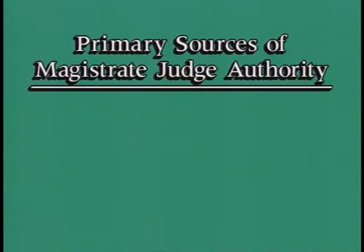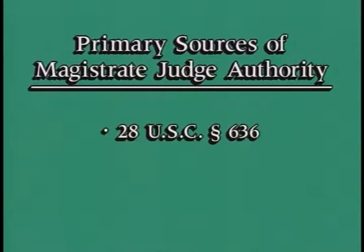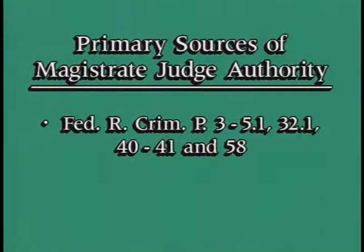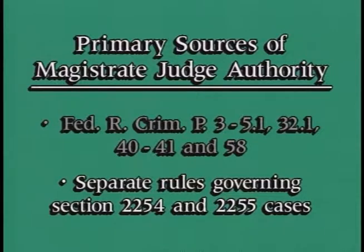I speak of United States Magistrate Judges. The primary sources of Magistrate Judge authority are 28 United States Code Section 636, Federal Rules of Civil Procedure 72–76, Federal Rules of Criminal Procedure 3–5.1, 32.1, 40–41, and 58, and the separate rules for Section 2254 and 2255 cases. It is convenient for discussion purposes to consider the authority of magistrate judges in two categories: civil and criminal.